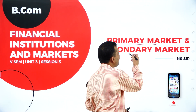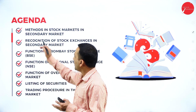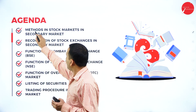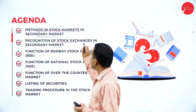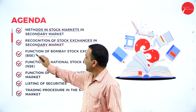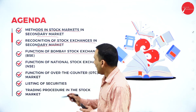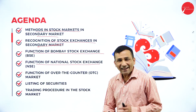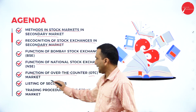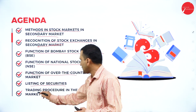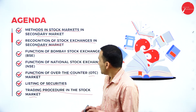The chapter name is Primary Market and Secondary Market, and today my agenda is to give you more clarity about what different types of methods exist in the secondary stock market. Next, recognition of stock exchange in the secondary market, functions of Bombay Stock Exchange — shortly BSE — functions of National Stock Exchange NSE, functions of the over-the-counter market, listing of security, and the trading procedures in the stock market.